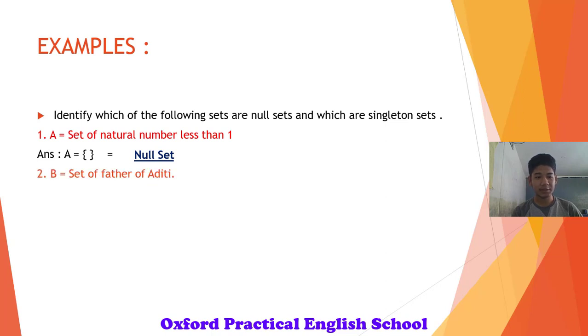Number 2. Set B, set of father of Aditi. We know that everybody has only one father. Therefore, Aditi also has one and his name is Ram. There is only one element and hence it is a singleton set.